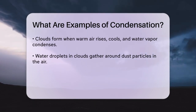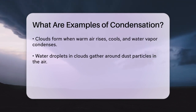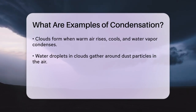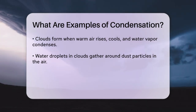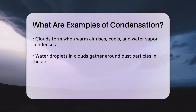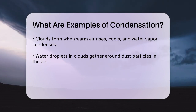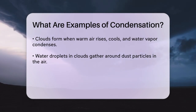Clouds are a large-scale example of condensation. They form when warm air rises and cools down in the atmosphere, causing the water vapor to condense into droplets or even ice crystals. These droplets then gather around dust particles in the air, creating the clouds we see.